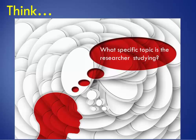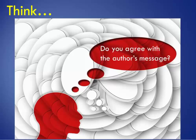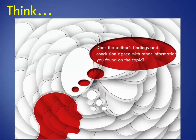As you're reading an article, ask yourself the following: What specific topic is the researcher studying? What is already known about this topic? Do you agree with the author's message? Does the author's findings and conclusions agree with other information you have found on this topic? Asking yourself these questions will help improve your comprehension of an article and help you to think critically about the topic.